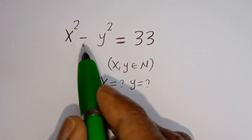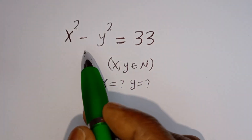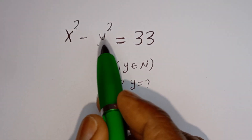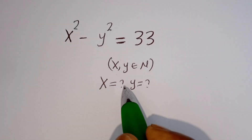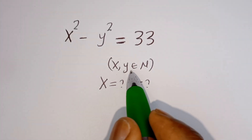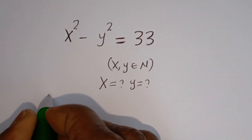Hello. How to solve for X and Y in this equation: X squared minus Y squared is equal to 33, where X and Y are members of the natural numbers.